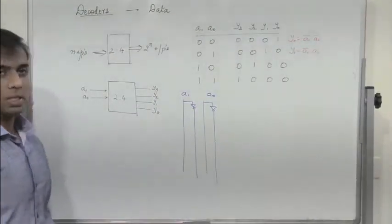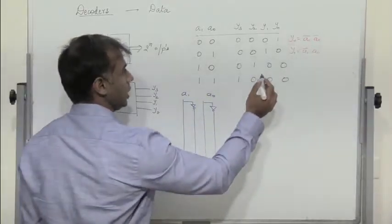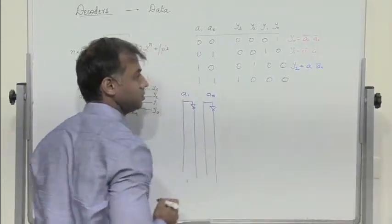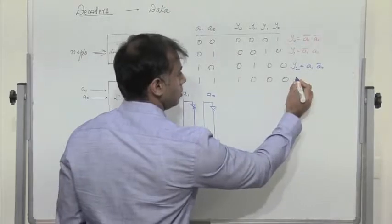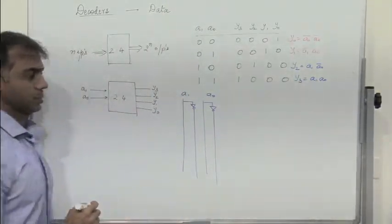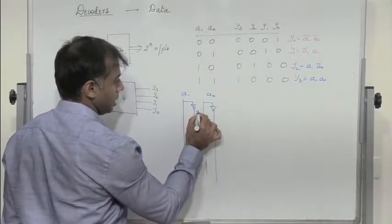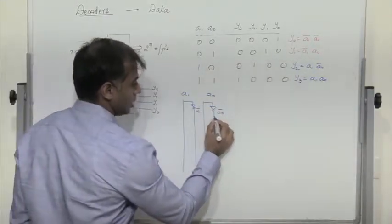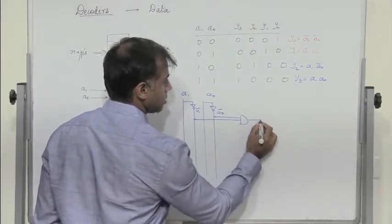The expression for Y2 equal to 1 is when A1 is 1 and A0 is 0, so we have Y2 equal to A1 into A0 bar. And similarly, the expression for Y3 equal to 1 is when both are 1, so Y3 equals A1 into A0. Y0 is A1 bar and A0 bar passed through an AND gate, giving us Y0.